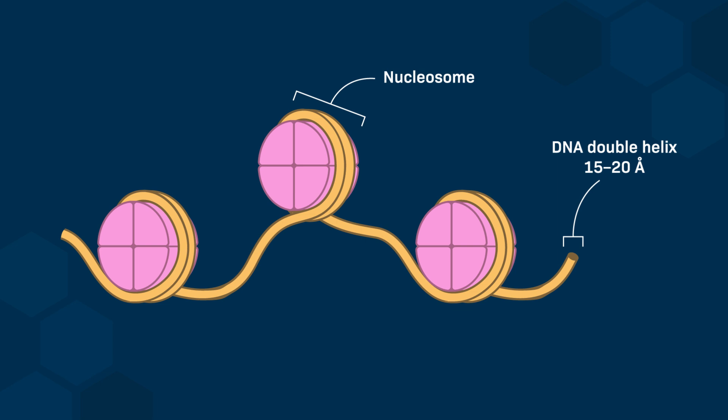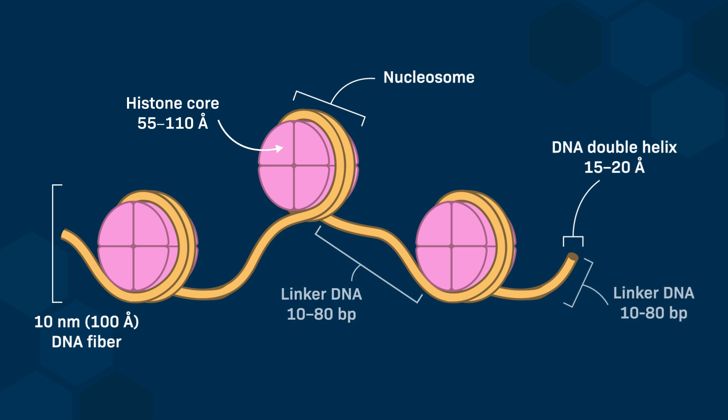Each nucleosome contains about 146 base pairs of DNA associated with histone cores. The fiber of 15-25 angstroms between nucleosomes corresponds to DNA called linker DNA, consisting of DNA ranging between 10 and 80 base pairs in length.